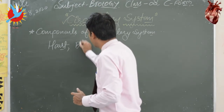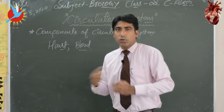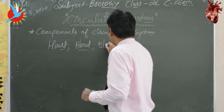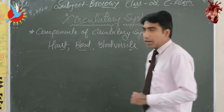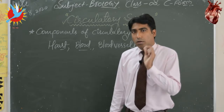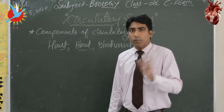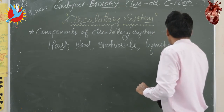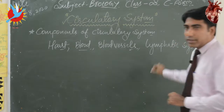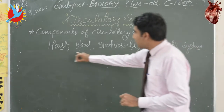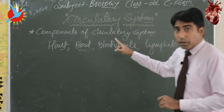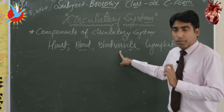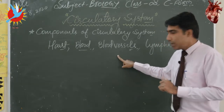After heart, we need blood, which is a fluid that keeps flowing inside our body throughout its parts. After blood, blood vessels — which are the network of small or broad pipes through which blood keeps flowing throughout the body. After blood vessels, the lymphatic system. We will discuss the role of lymph and lymphatic system later on. So these are the components of the circulatory system: heart, which is a muscular organ; blood, which is a fluid; blood vessels, which is a network of pipes; and the lymphatic system.